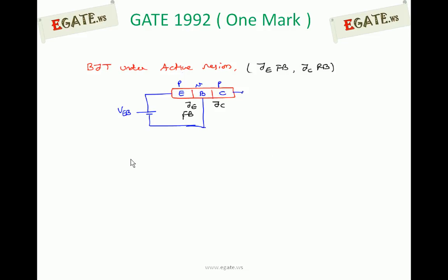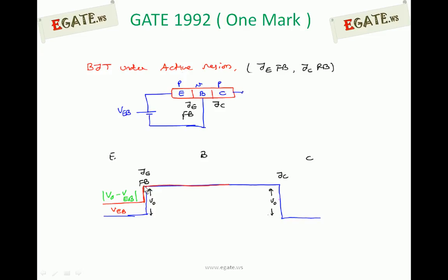In the diagram, the red line indicates the reduced potential barrier height under forward bias, V0 minus VEB. The blue line shows the open circuit height V0. We are not applying anything to the collector base side yet, so that junction has not changed.